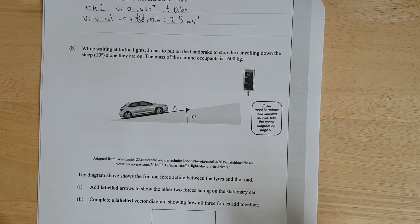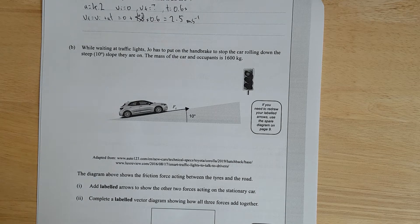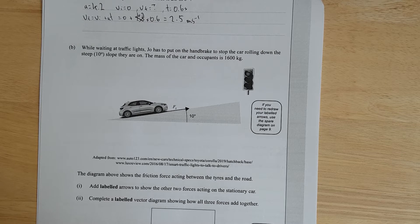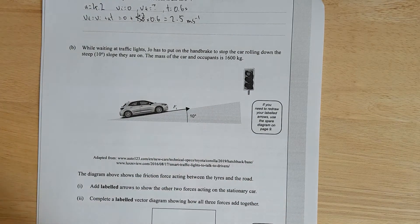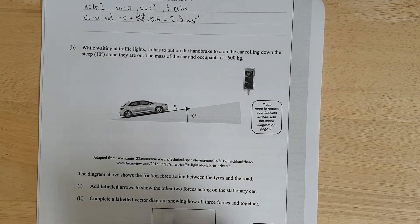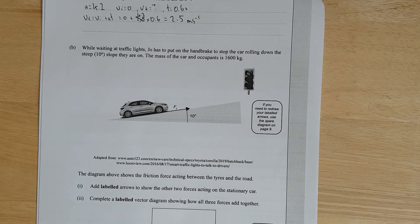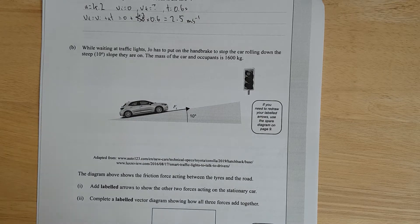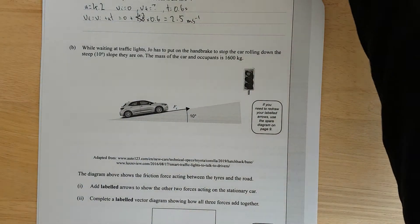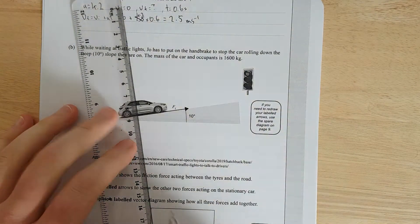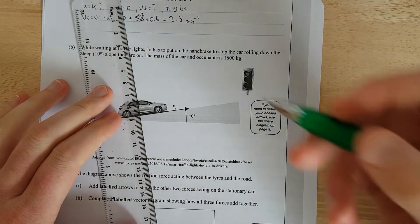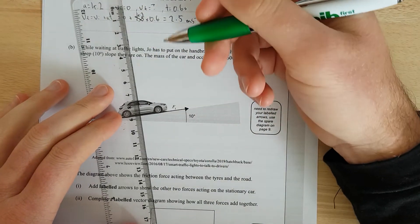Next question. While waiting at traffic lights, Joe has to put the handbrake to stop a car from rolling down the steep 10 degree slope they're on. The mass of the car and occupants is 1,600 kilograms. This has been plagiarized from the 2015 exam. When I first saw this question last year, it seemed familiar. If you did the 2015 exam as practice, you would have smashed this question.